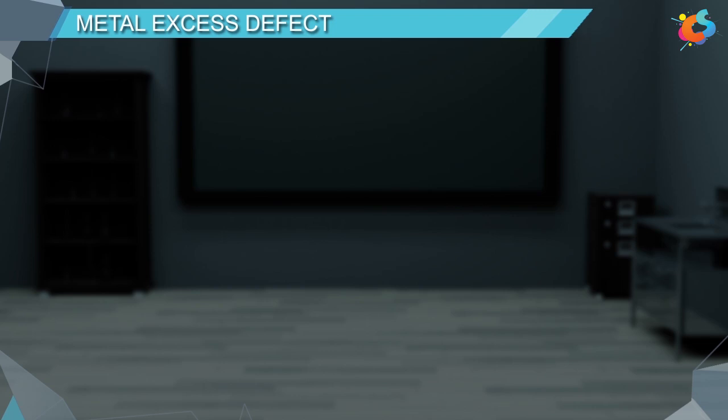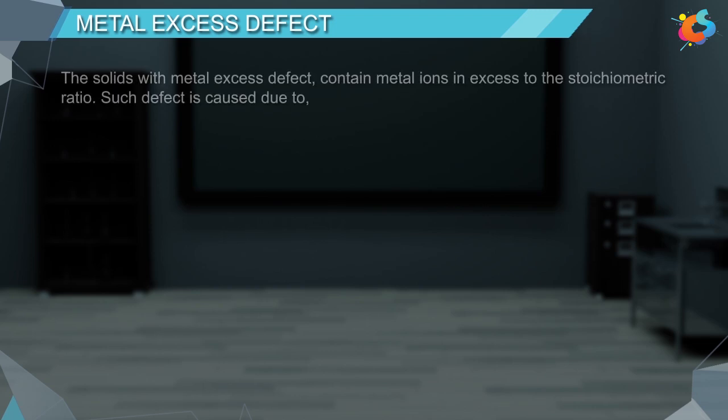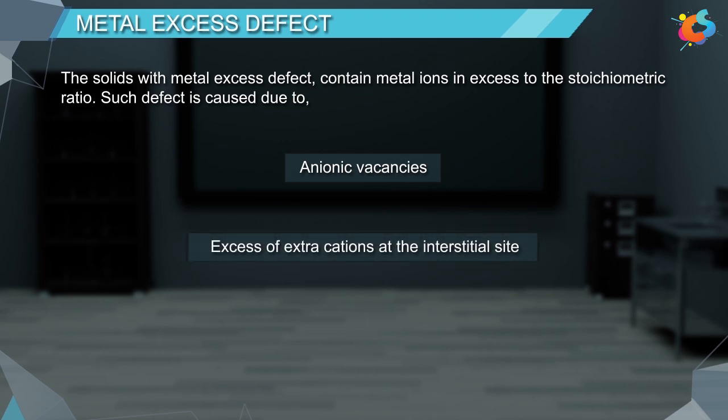Metal excess defect. The solids with metal excess defect contain metal ions in excess to the stoichiometric ratio. Such defect is caused due to anionic vacancies or excess of extra cations at the interstitial site.